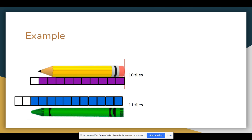Which one is longer? And how do we know? We can say that the crayon is longer than the pencil because 11 tiles is greater than 10 tiles. Alligator will eat the 11 tiles. So that's how we know that the crayon is longer.